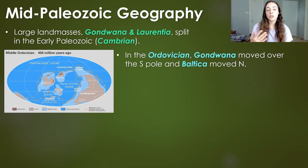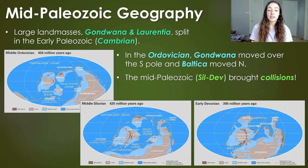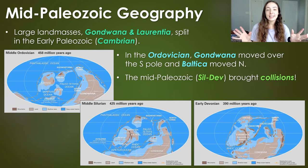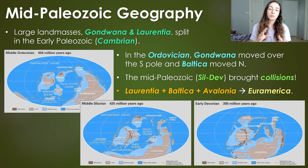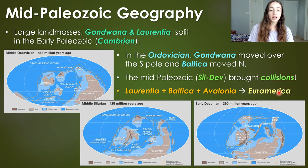Baltica moved northward. Then in the Middle Paleozoic, the Silurian and Devonian periods brought many collisions among these continental land masses. The major collision involved three land masses — Laurentia, Baltica, and a smaller one called Avalonia that had broken off of Gondwana earlier — and these collided to form Euramerica. We'll talk about the mountain building events these collisions caused next.